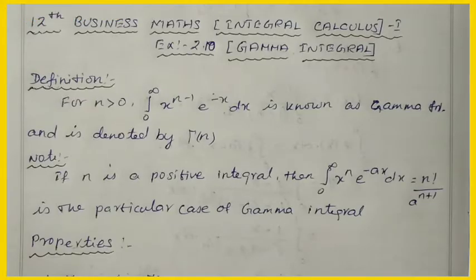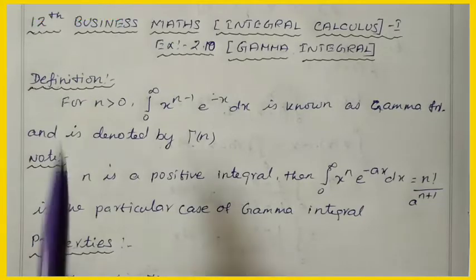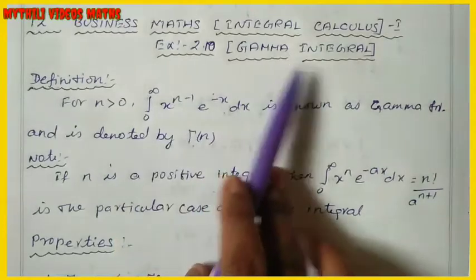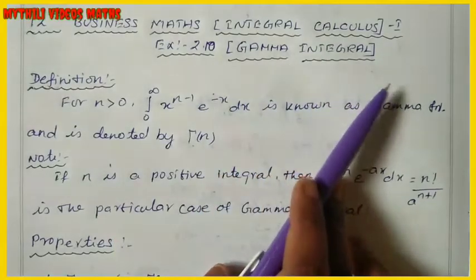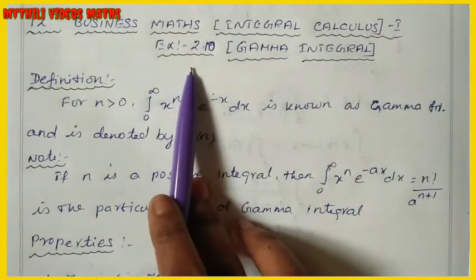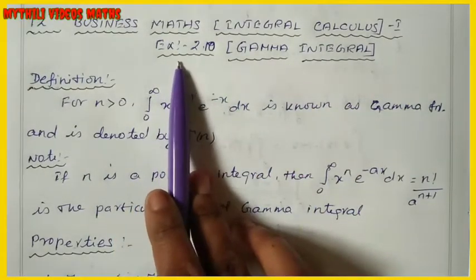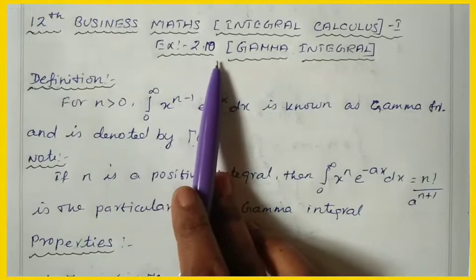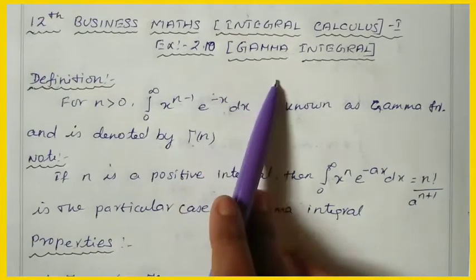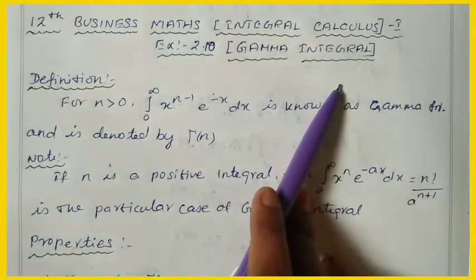Hi students, I am Maitli. This is 12 Business Maths, Integral Calculus 1. We have to see the second chapter, Exercise 2.10 — the Gamma Integral.